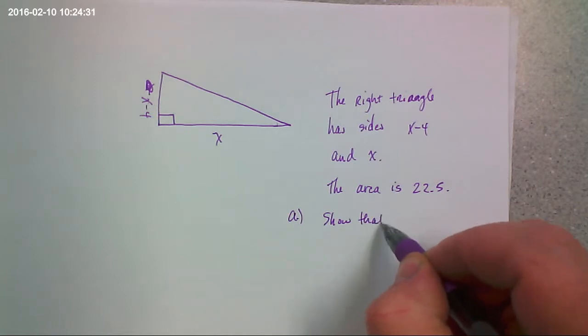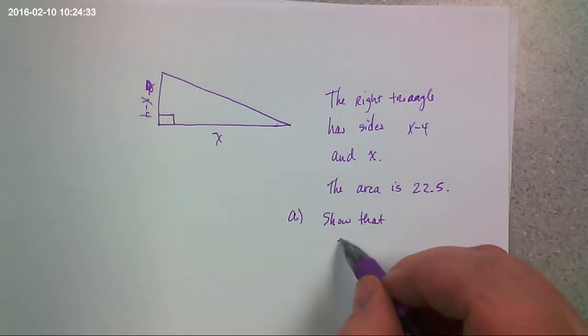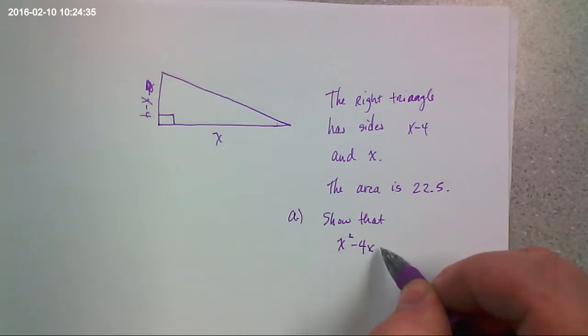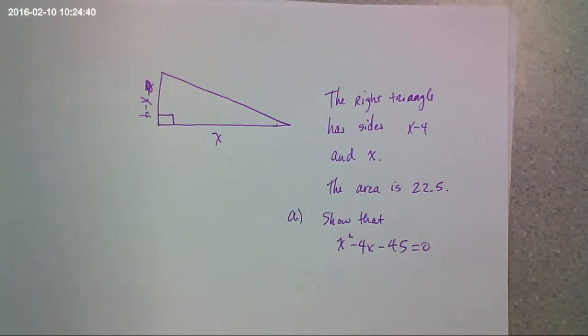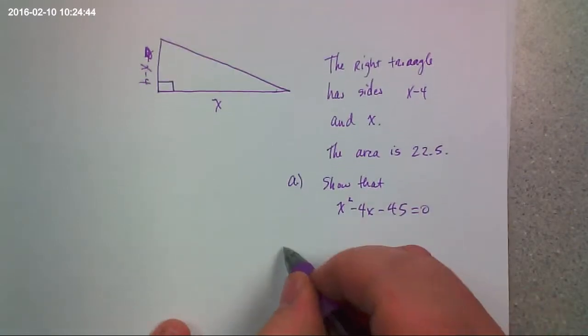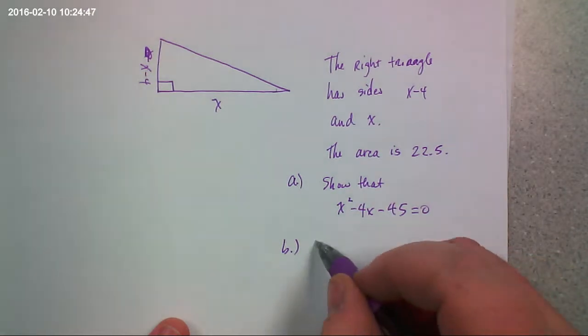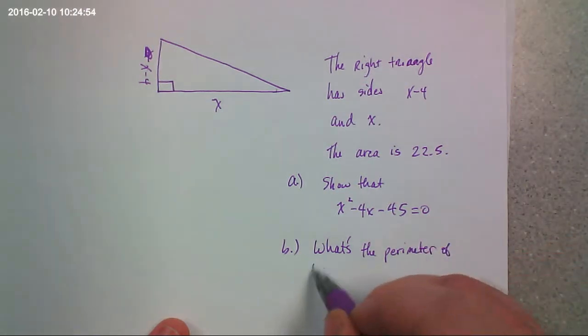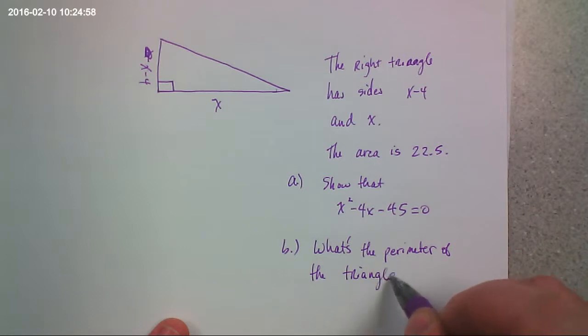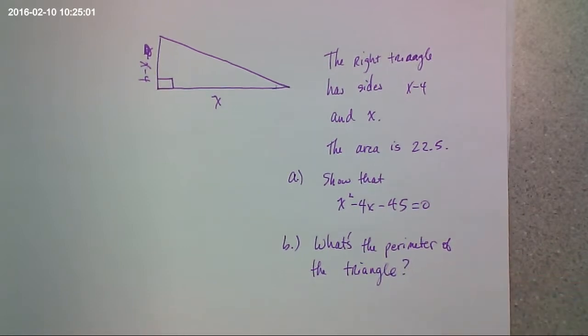The area is 22.5. So it'll say show that x squared minus 4x minus 45 equals 0. Part B will say, what's the perimeter? And that's what you got.